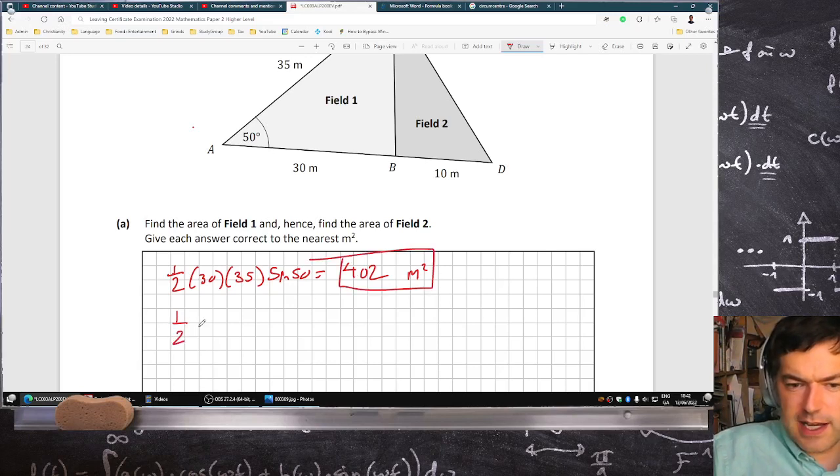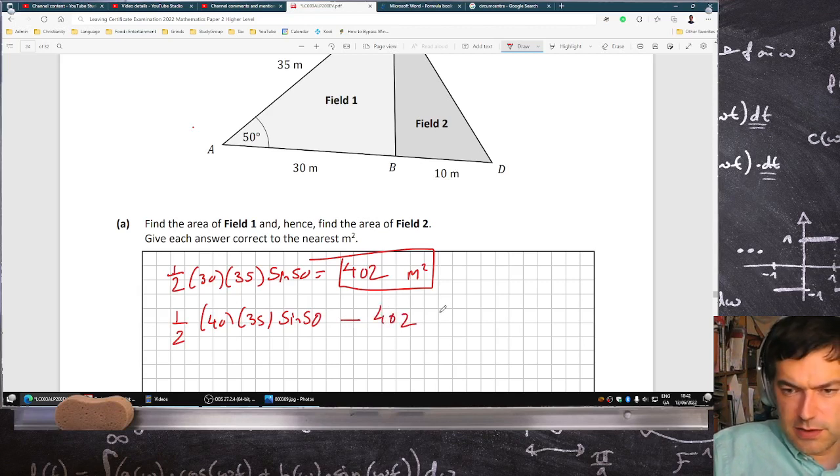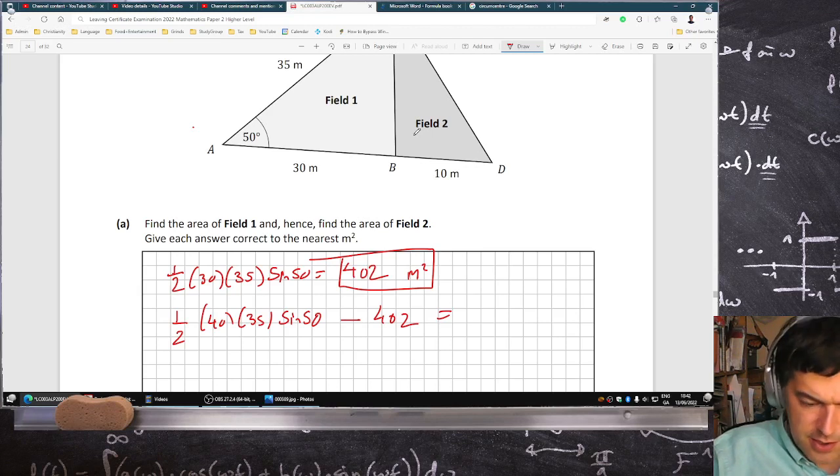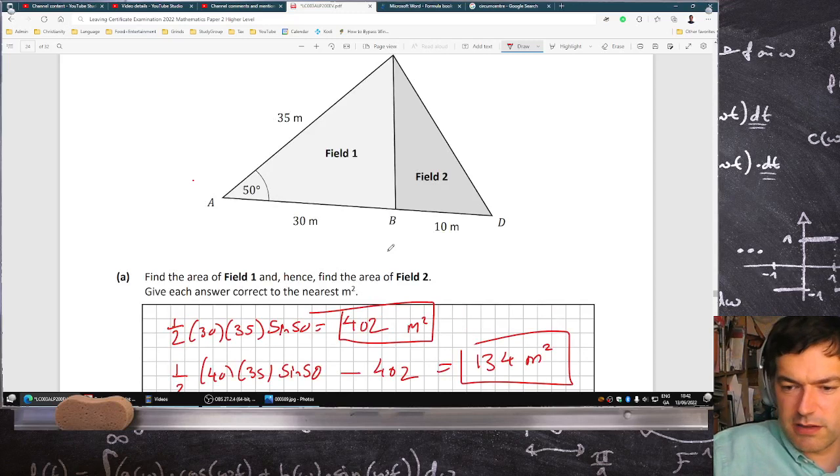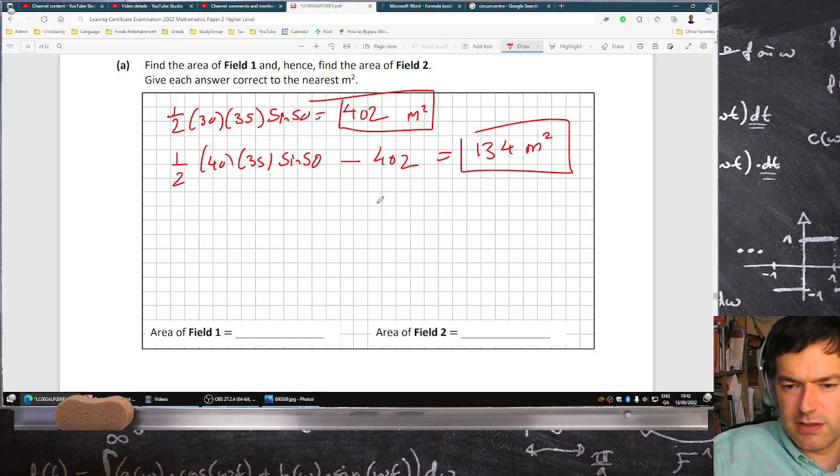For the whole field it's one-half times 40 (that's the full length of the big triangle) times 35 times sine 50. Then if I subtract away my last answer, I'll get how much was for the extra piece, field two. So 20 times 35 times sine 50 minus my previous answer, and that's 134 meters squared, which looks about right.